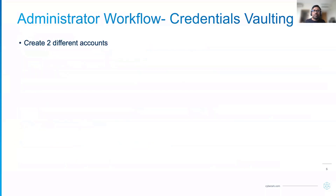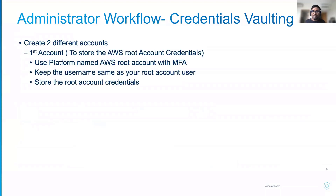Once all prerequisites are done, let's see how the credential vaulting is going to look like. We will be creating two different accounts. The first account is where we will store the root account credential, and for this account we will be using the AWS root account with MFA platform that we imported earlier. Our recommendation is to keep the username as your root account user, so it is easier for the user to find the username and password from the same place.